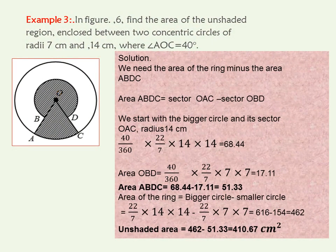Let us look at example 3 where we are told to find the area of the unshaded region enclosed between two concentric circles of radii 7 centimeters and 14 centimeters where angle AOC is 40 degrees. To get the area of the unshaded part, which is actually a ring made by the bigger circle and the smaller circle, we need first to find the area of sector ABDC.